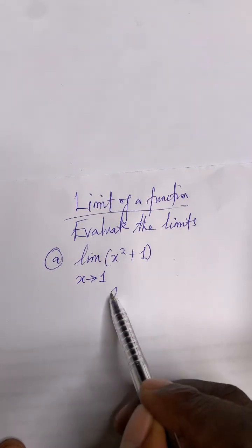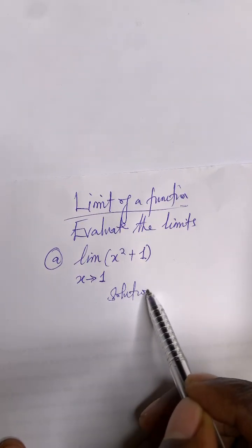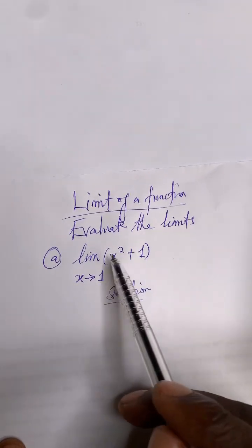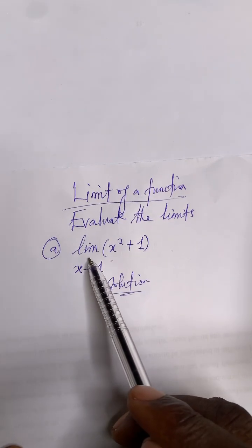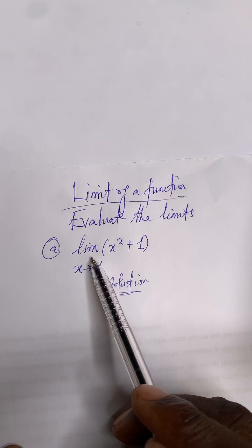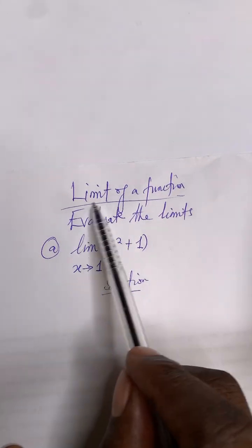Okay, let's evaluate this limit. Limb is the short form of limits, so if you see limb, it's the short form of limits.